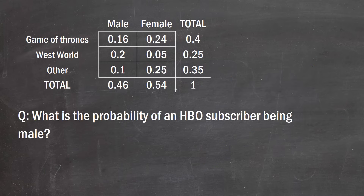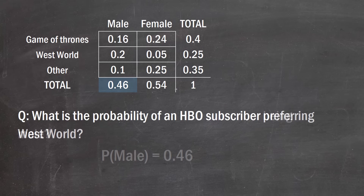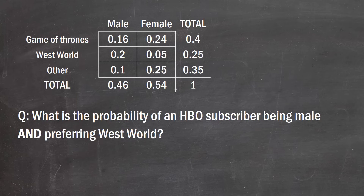Here are a couple of practice questions. What's the probability of an HBO subscriber being male? That's simply the marginal probability for male: 0.46. Note that when we say 'probability' we're after a number between 0 and 1 — you can convert to a percentage if asked, but otherwise leave it as 0.46. What's the probability of preferring Westworld? That's simply 0.25. Both of those were asking for marginal or simple probabilities.